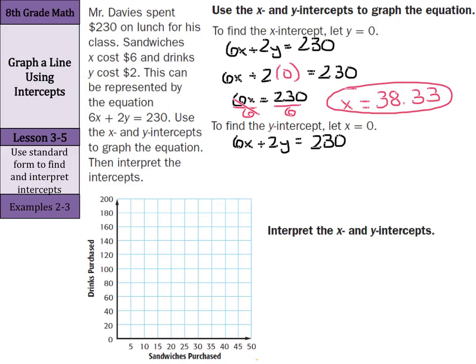So, going back to the problem now, 6, and we're going to let x equals 0, plus 2y equals 230. 6 times 0 is 0, so we're left with 2y equals 230. And this time, divide by 2 on both sides, and y is going to equal 115.